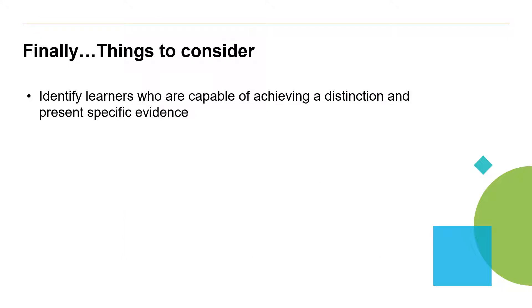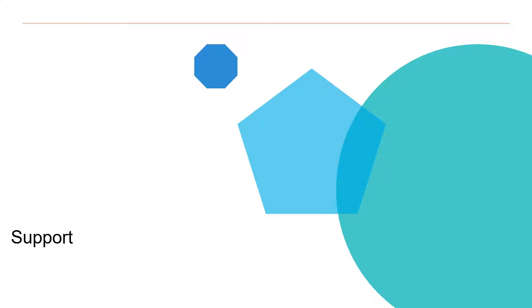Finally, if a learner is capable of achieving a distinction, it's important that the guidance given when putting the portfolio together allows them to explicitly evidence the distinction differentiators. Make sure learners are fully aware of those descriptors and are familiar with the requirements at distinction level. With regard to further support, we have Smart Screen, centre guides in the forms of EPA packs, welcome packs, and our lead independent Endpoint Assessor report, which sits on the website.